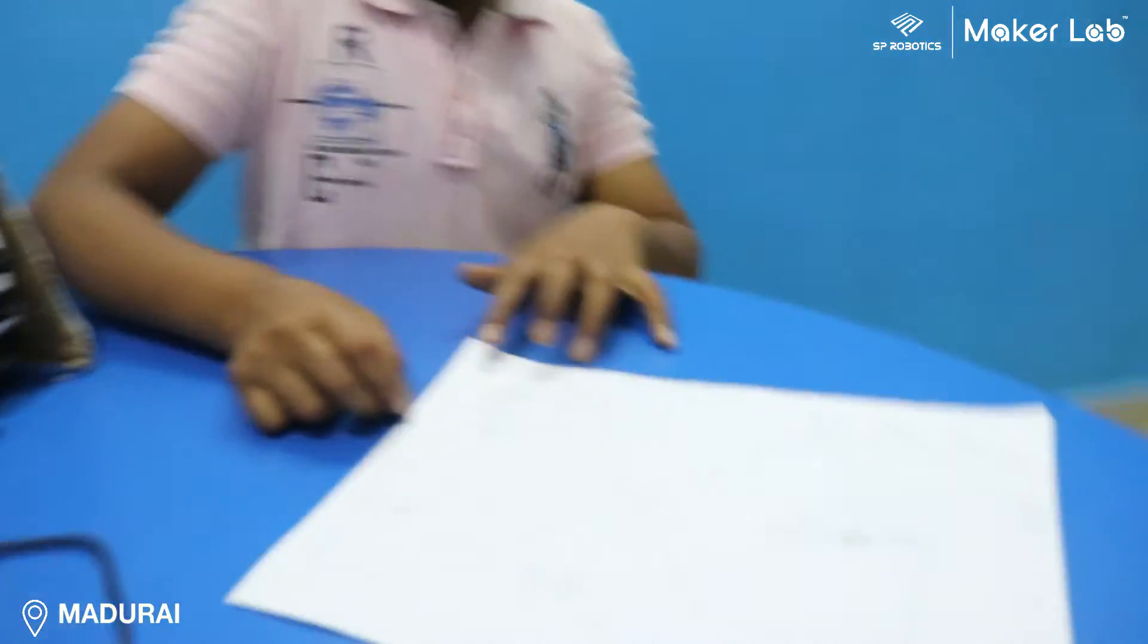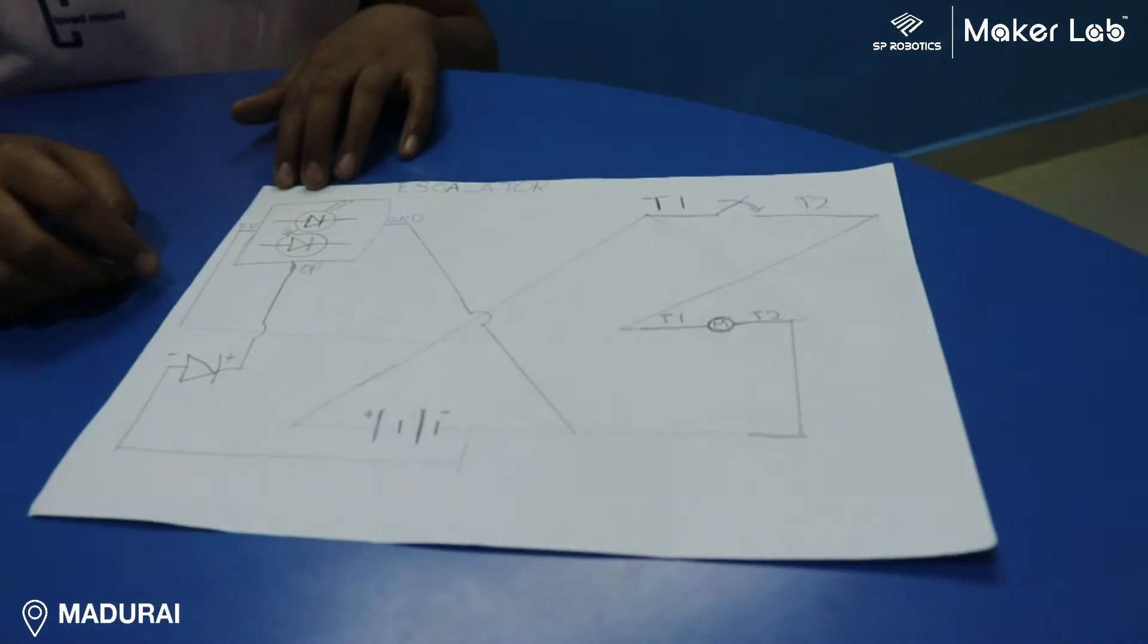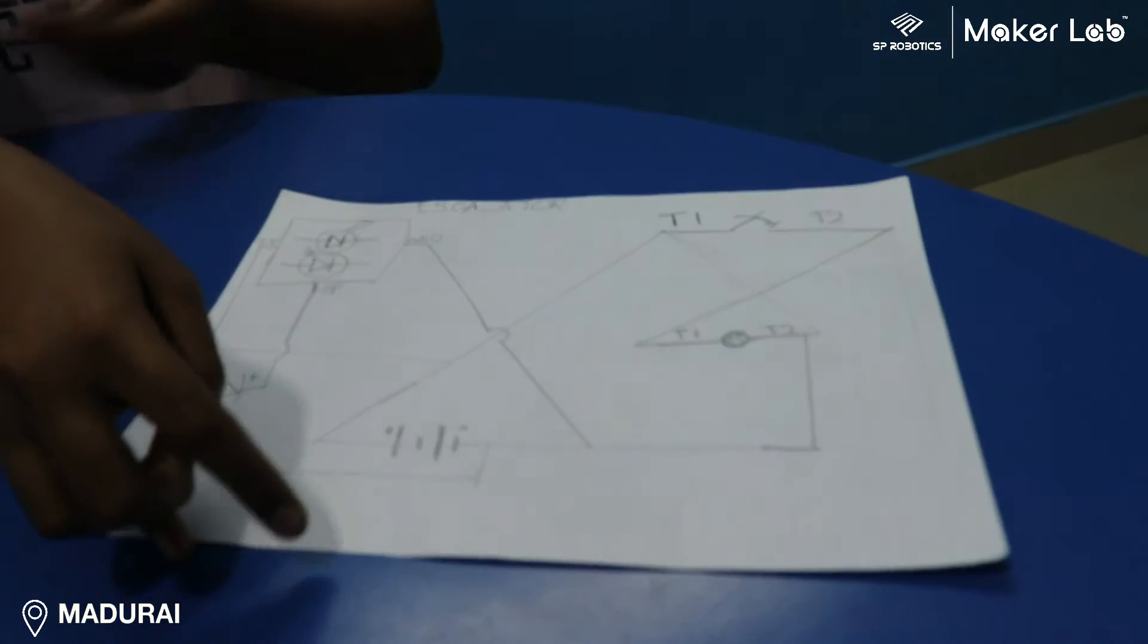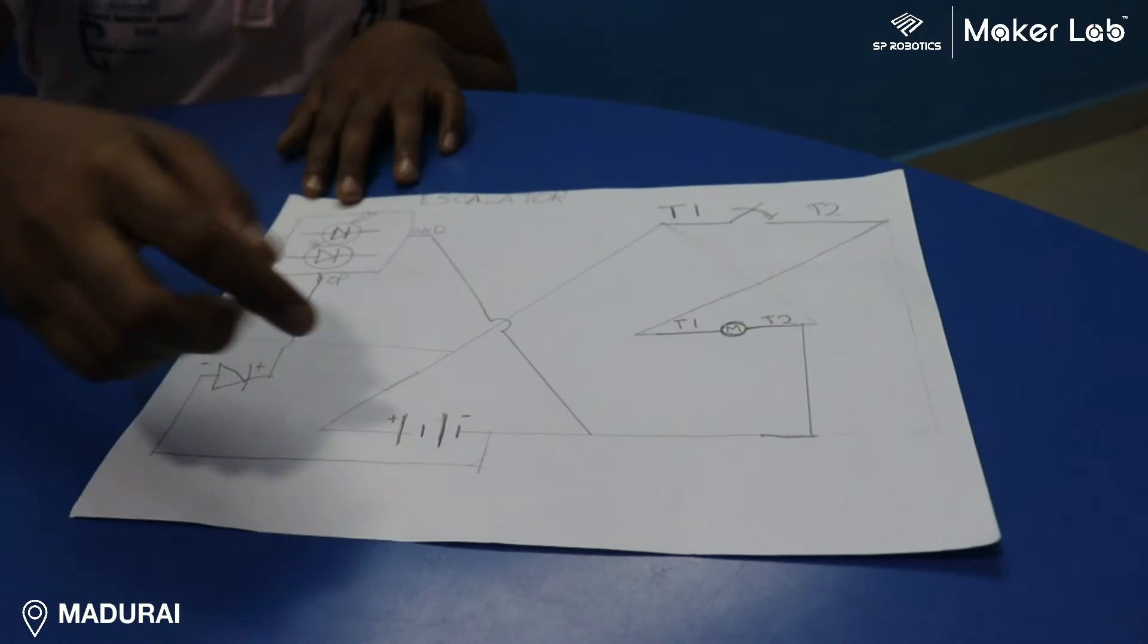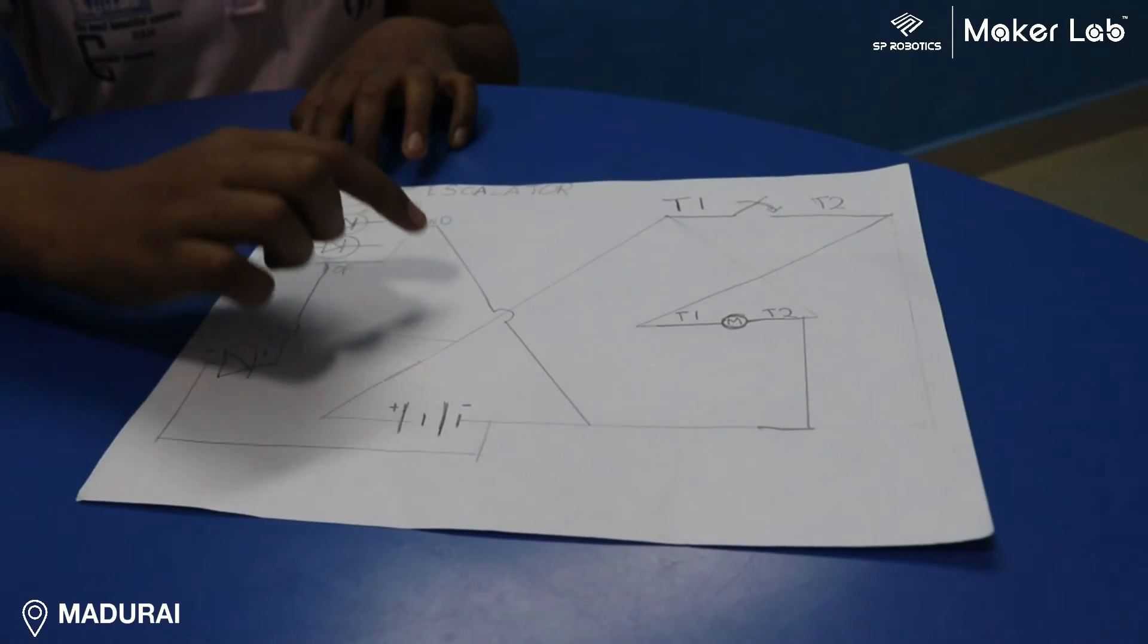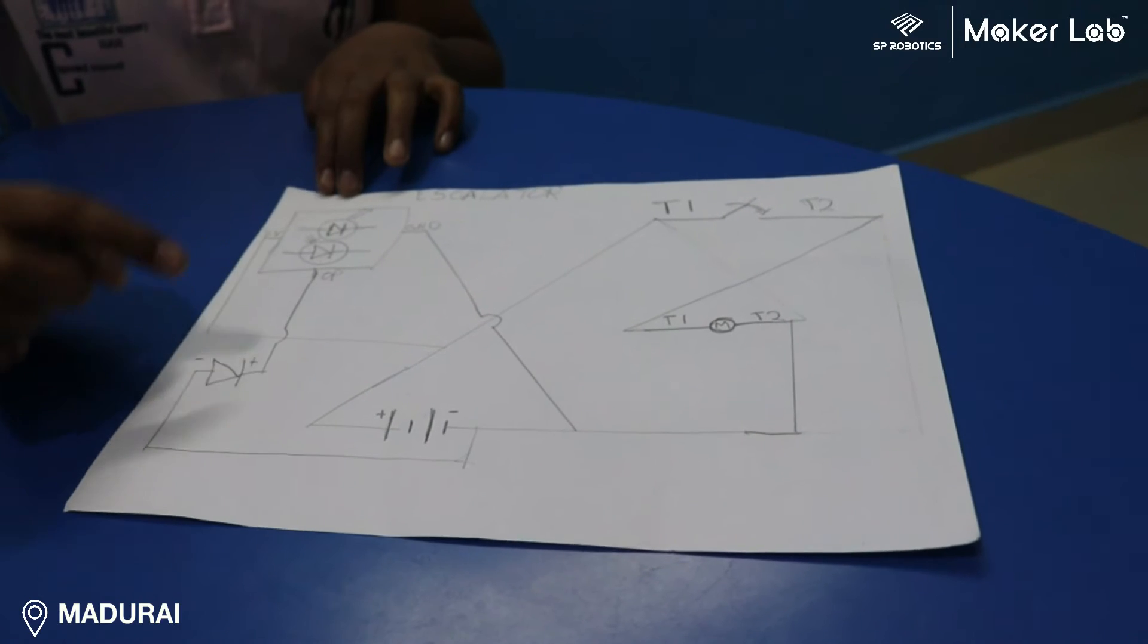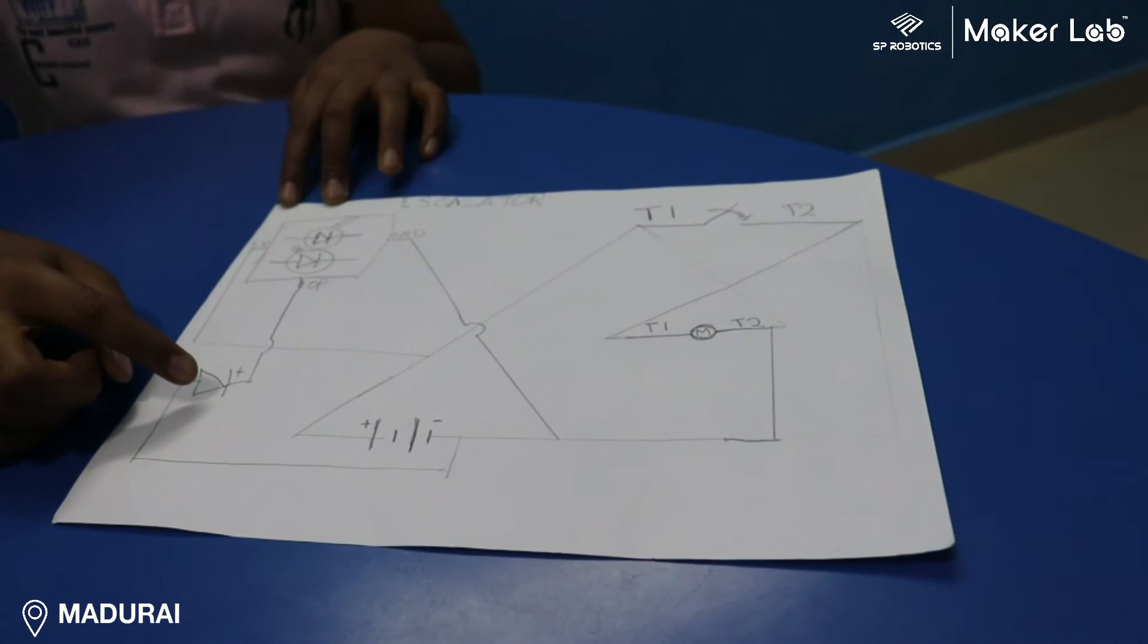This is the circuit diagram. The 5V of the IR sensor goes to the plus of the battery. The ground of the IR sensor goes to the minus of the battery. Output goes to the plus of the LED.